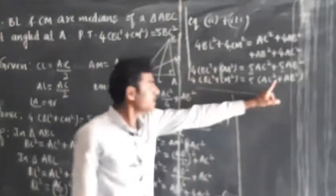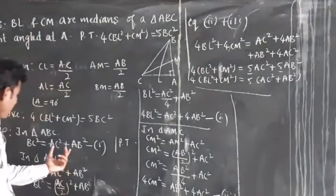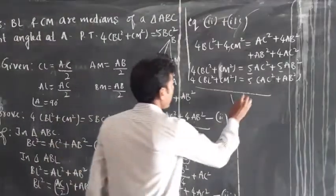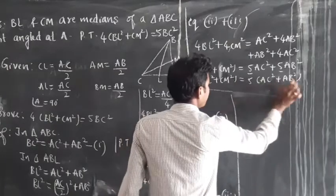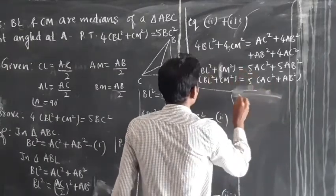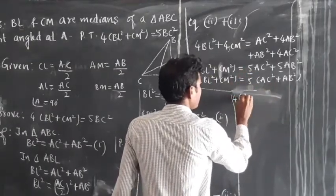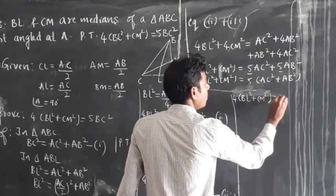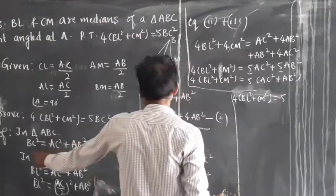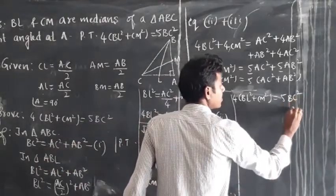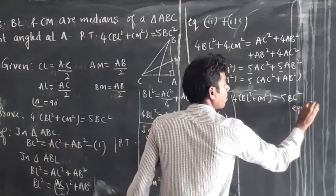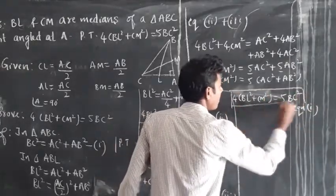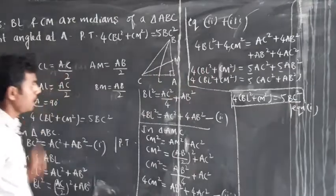From equation number 1, AC square plus AB square equals BC square. So 4(BL square plus CM square) equals 5BC square. This is the required result. Please note this.